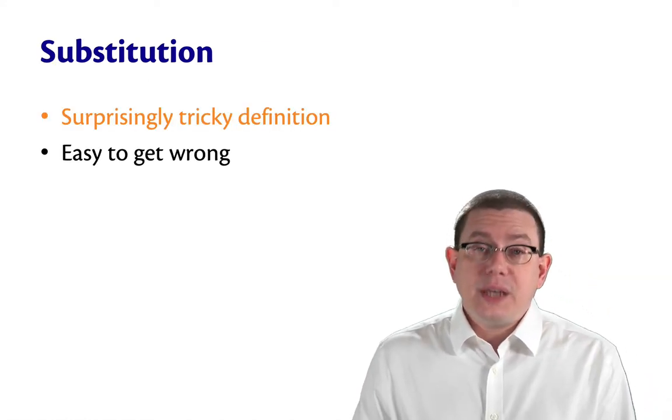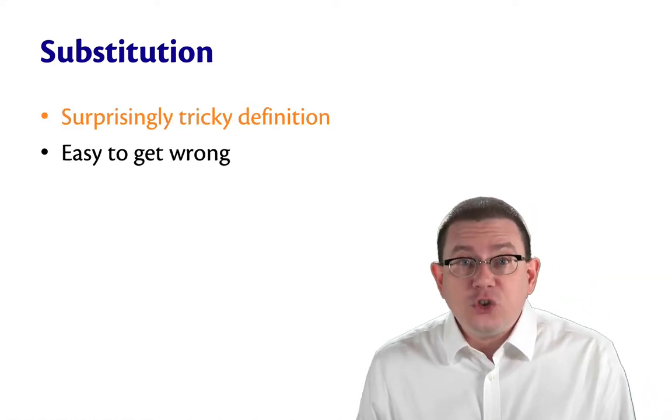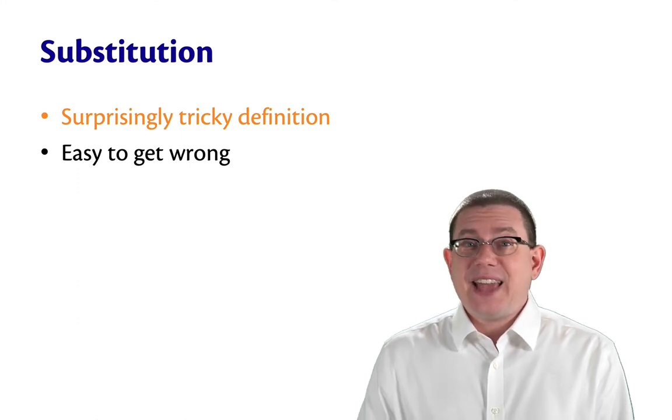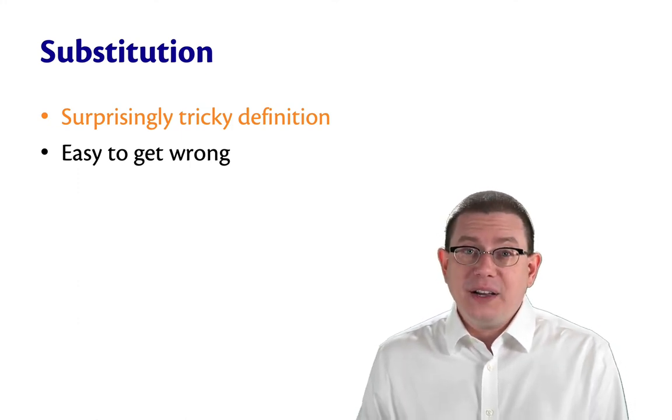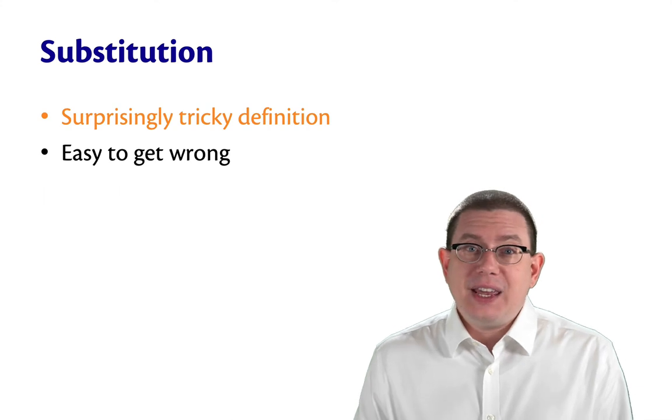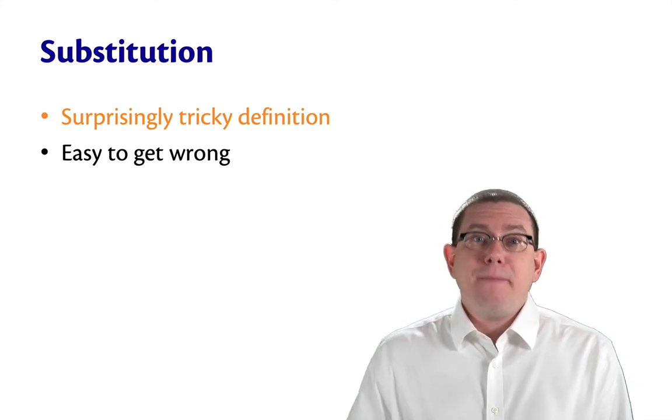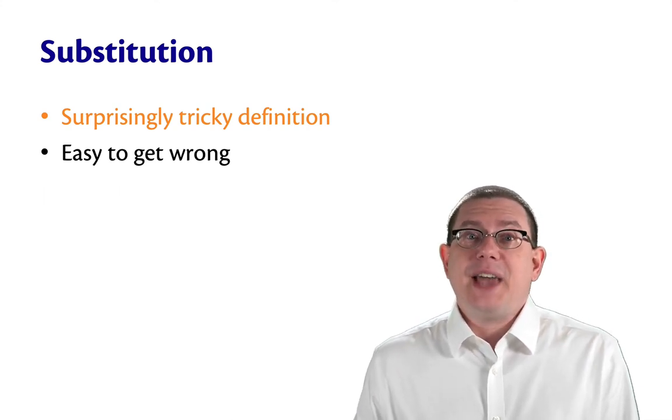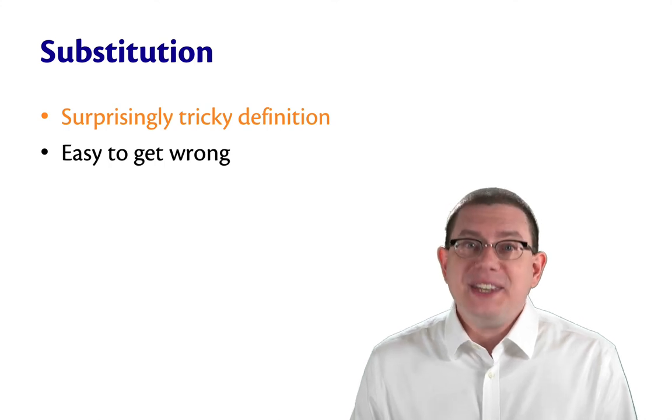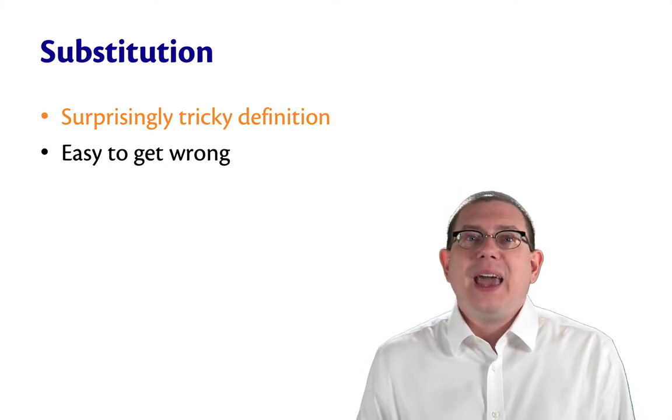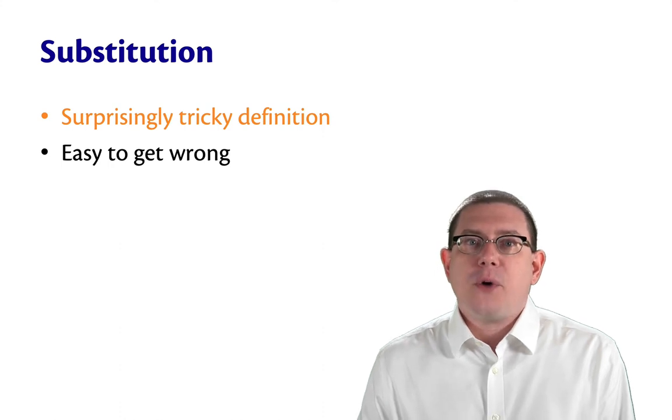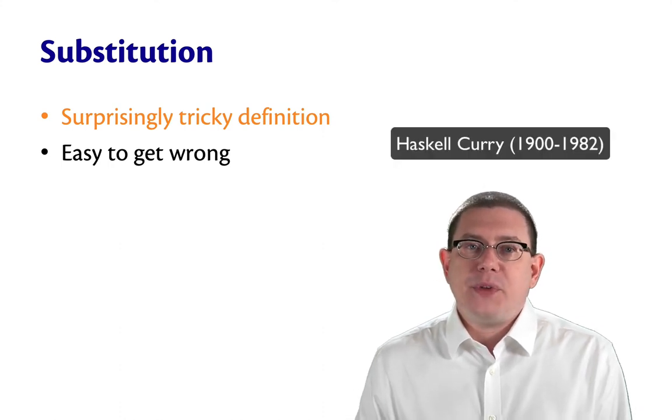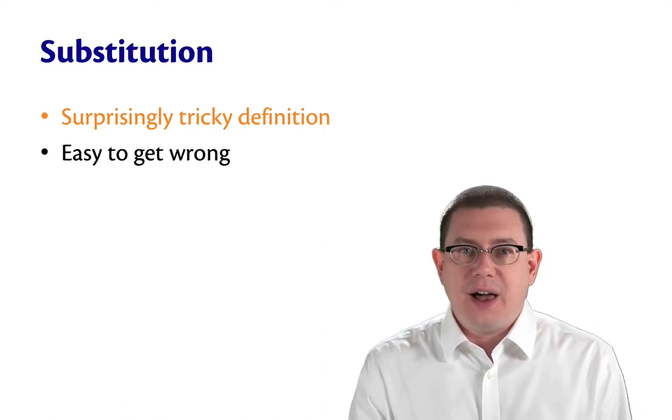I hope you'll agree, substitution is a surprisingly tricky definition. It's actually very easy to get wrong. I'm not an expert in the history of mathematics, but I'm told that many mathematicians throughout the centuries have in fact had subtly broken definitions of substitution and that it took until the 1950s for Haskell Curry to come up with a truly correct definition of it.